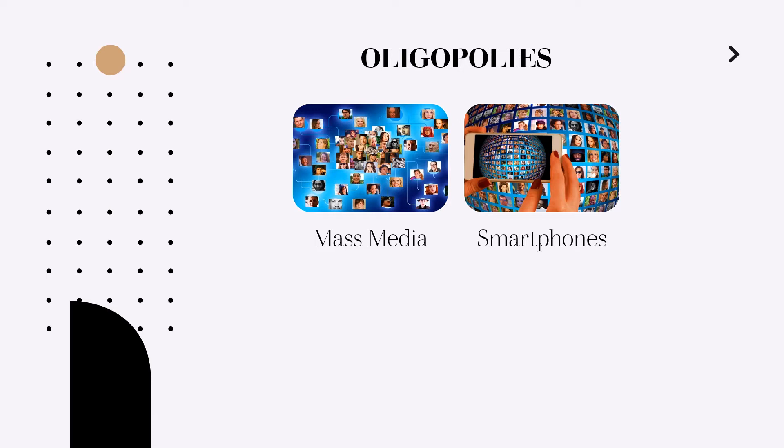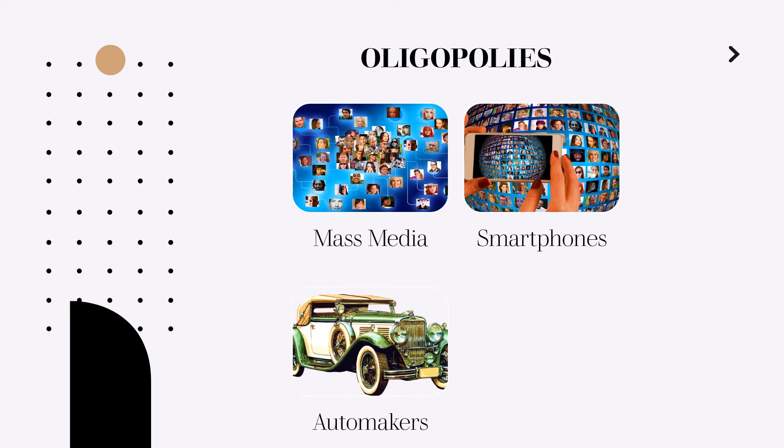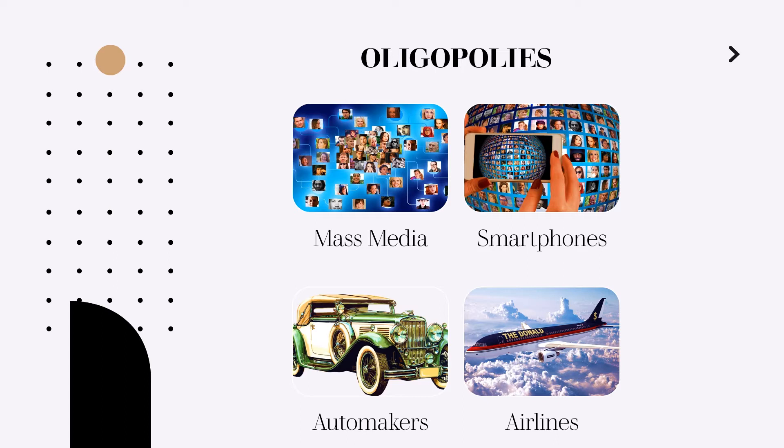Next, smartphones — Apple iOS and Google Android dominate the smartphone operating system market. Next, automakers are another example of an oligopoly, with leading manufacturers in the United States being Ford, General Motors, and Chrysler. Worldwide there are perhaps a dozen key automakers including Toyota, Honda, Volkswagen Group, and Renault-Nissan-Mitsubishi. Finally, airlines — the United States airline industry today is arguably an oligopoly.